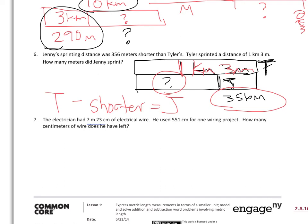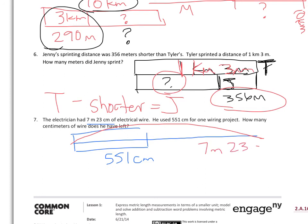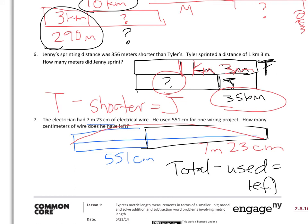Last one. The electrician had 7 meters and 23 centimeters of electrical wire. He used 551 centimeters for one wiring project. This total distance of his wire was 7 meters, 23 centimeters. They want to know how much does he have left. So if he used that much, how much is in this part? So again, we could take the total, subtract the part he used, and that will tell us how much is left.